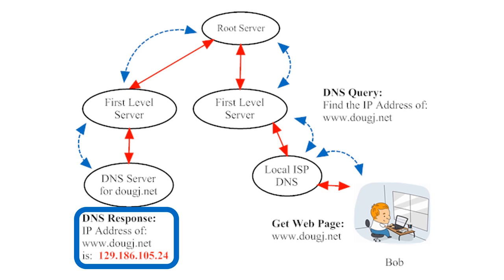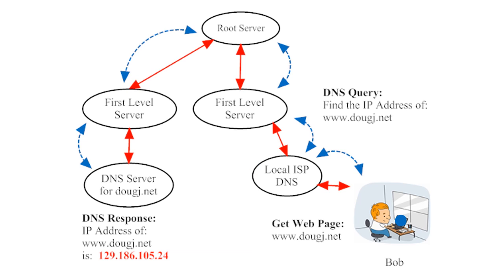The IP address gets sent back through the network of DNS servers and eventually makes it back to Bob's computer. Once Bob's computer knows the proper numerical IP address, it can make an information request from the machine storing the web page data. Bob's computer might now store the IP address for later use. Although it takes a while to explain the process of accessing an IP address from a DNS server, the computers involved carry out this operation so rapidly that we normally don't even realize that anything has happened. That's how DNS servers help coordinate IP addresses.